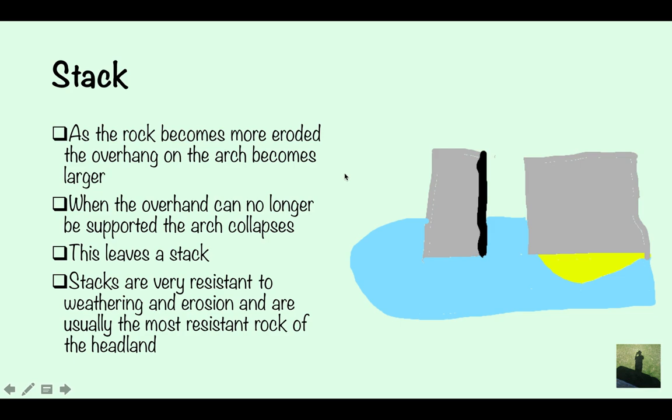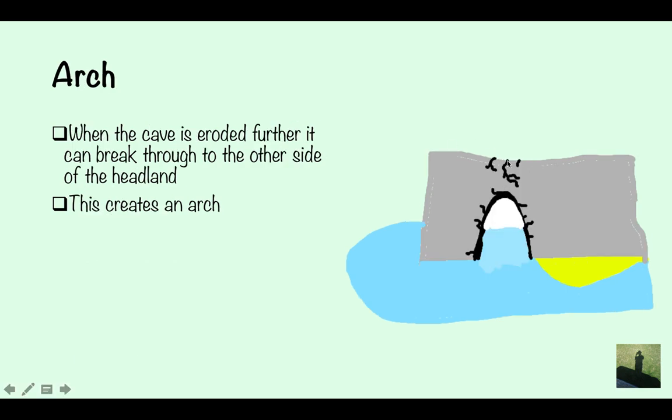Stack. As the rock becomes more eroded, the overhang of the arch becomes larger. When the overhang can no longer be supported, the arch collapses. So this bit here, it's going to get weathered away, and as it becomes weaker and weaker, it becomes less supported. The arch gets bigger. It's suddenly just going to collapse.